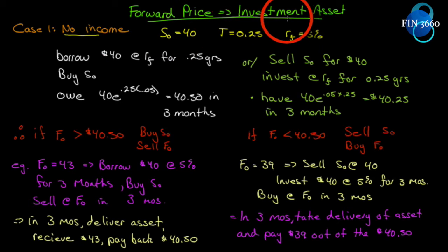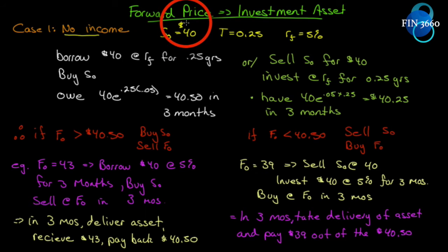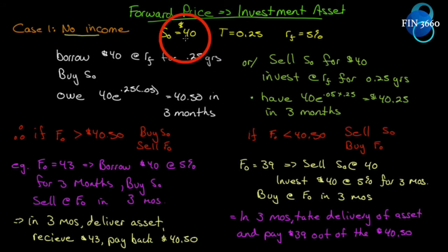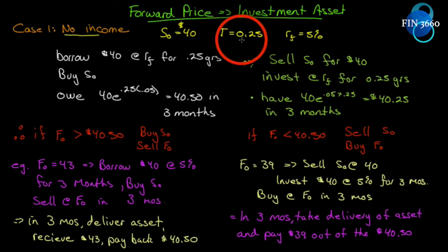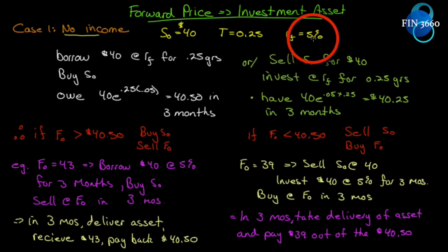Let's take an investment asset that produces no income. We observe a spot price of $40 right now. What would be the futures price today for a three-month contract? We want to know what the futures price today is, and our risk-free rate is 5%, with continuous compounding.